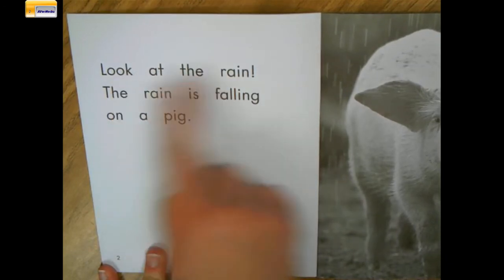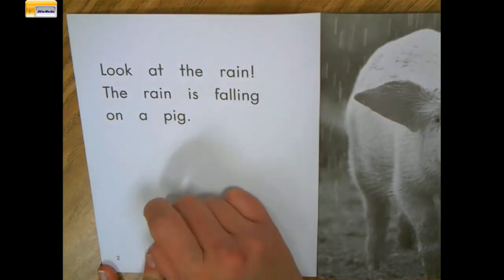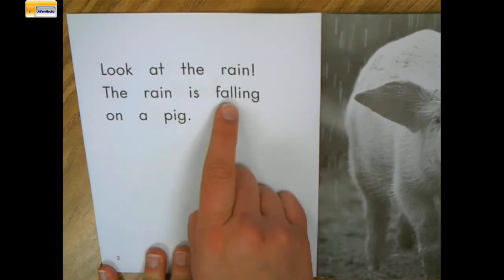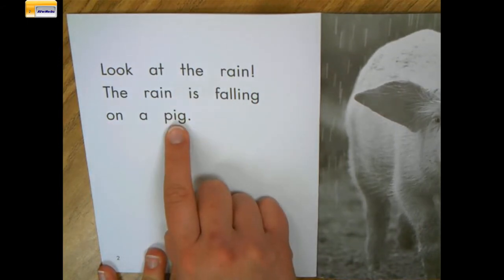But this pattern had two sentences on the page that went on three lines. So I had to read, look at the rain. The rain is falling on A. I had to remember and read all those words before I got to the part where it changed.